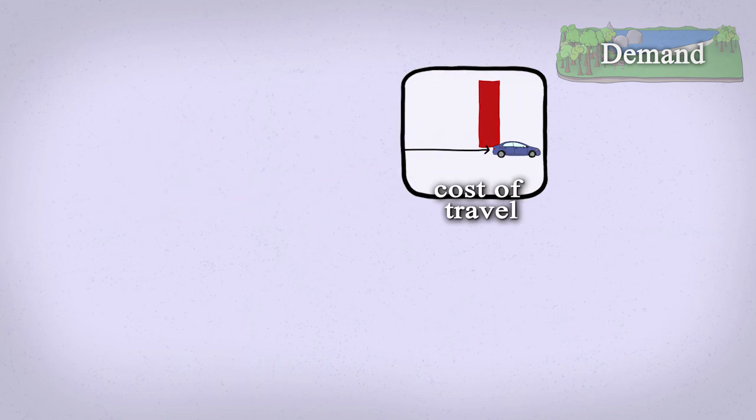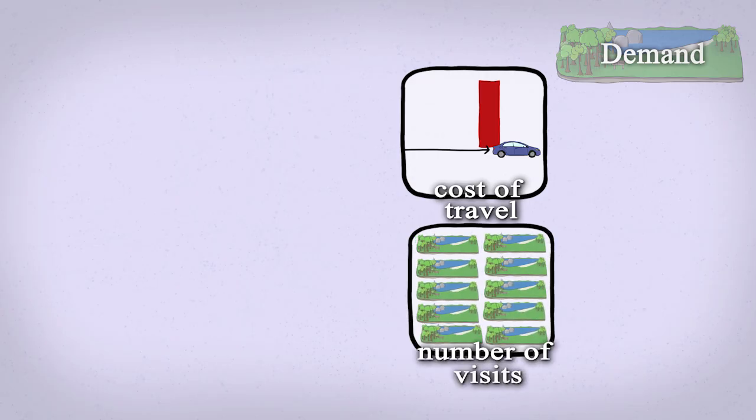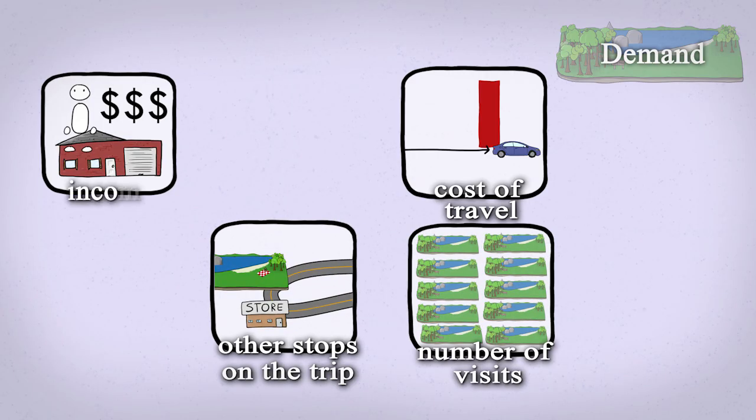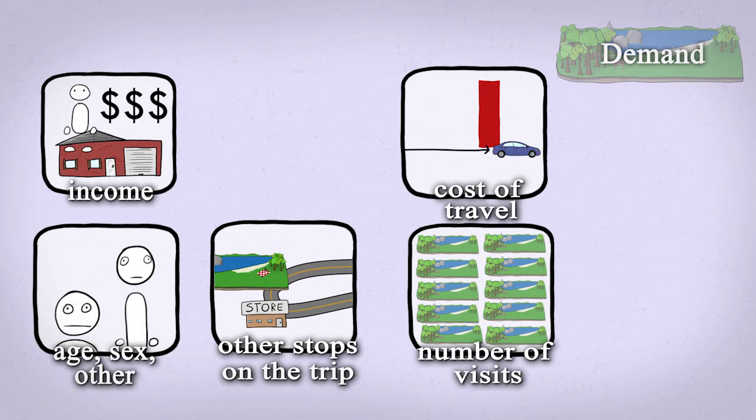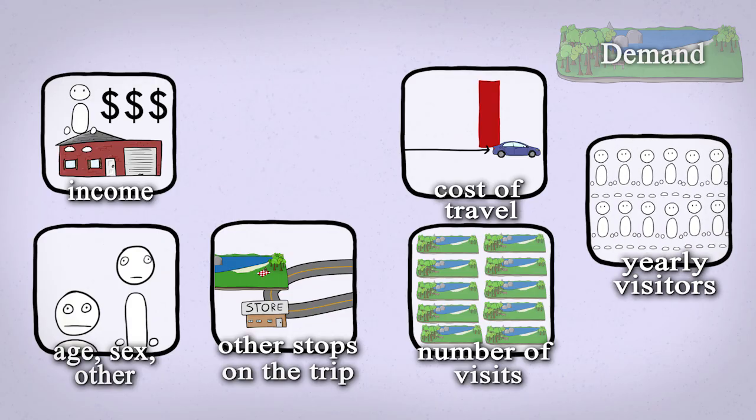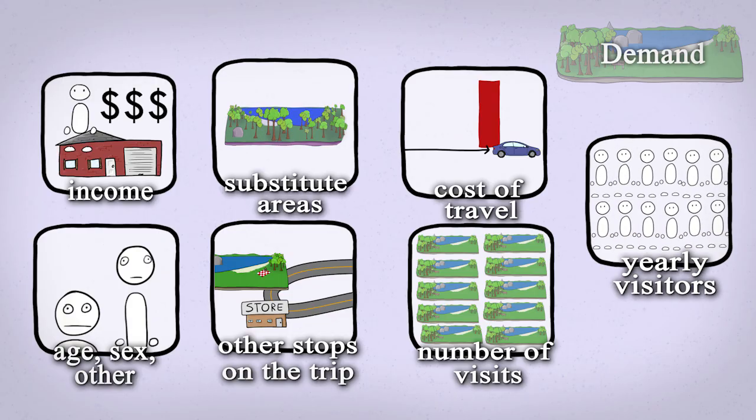It depends a bit on the specific kind of analysis we're doing, but the general information that we want from people is how far they travel, how many people are traveling together, and how they travel, so we can know their travel costs per person. We want to know how often they go, if they're doing anything else on the trip, their income or other demographics that affect demand. And we want to know how many people use the site each year, and whether or not there are substitute sites in the area.